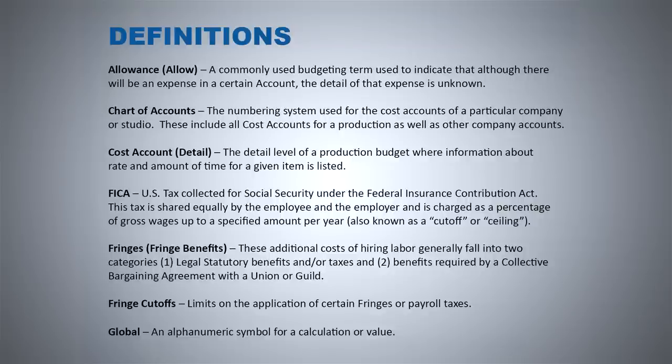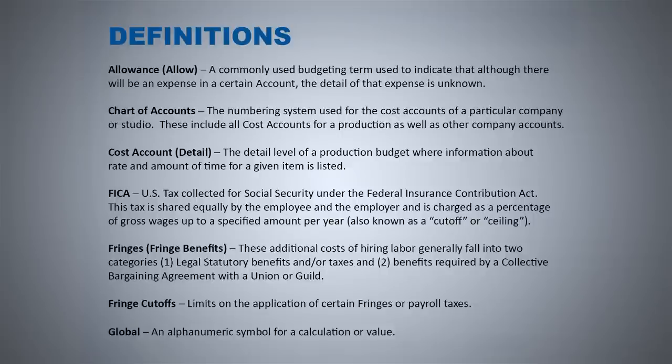FICA stands for the Federal Insurance Contributions Act. This tax is shared equally by the employee and the employer and is charged as a percentage of gross wages up to a specified amount per year, also known as a cutoff or ceiling. FICA is a fringe. Your fringes generally fall into two categories: legal statutory benefits and taxes, or benefits required by a collective bargaining agreement with a union or guild. These are crucial, as those organizations will certainly expect to be paid in a timely manner, so you have to include that money in the budget.